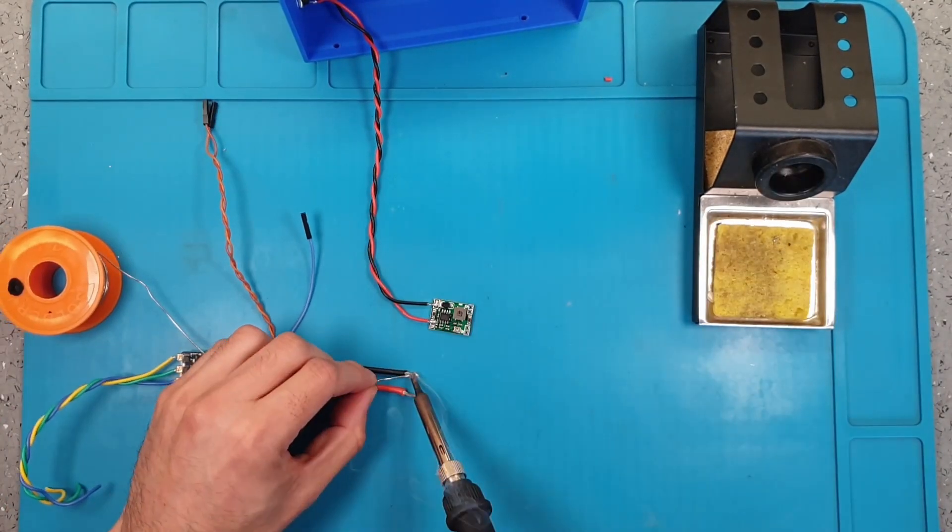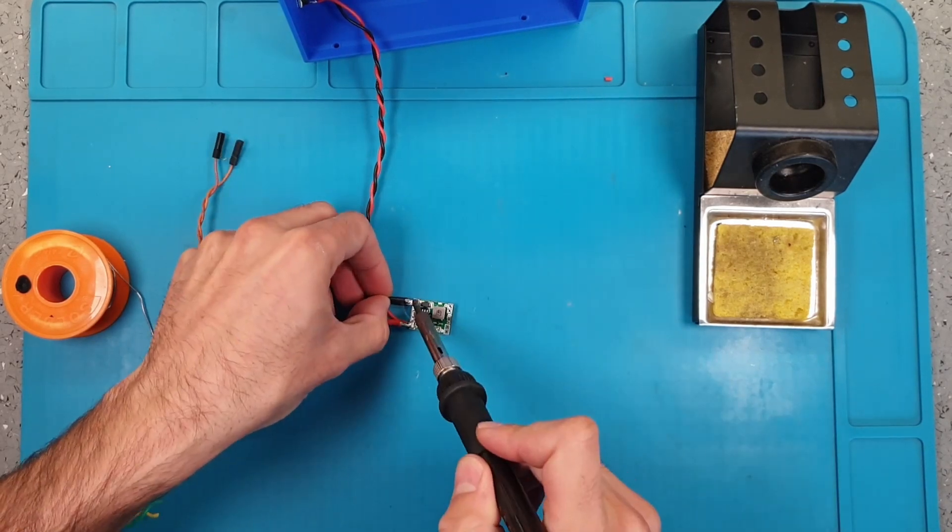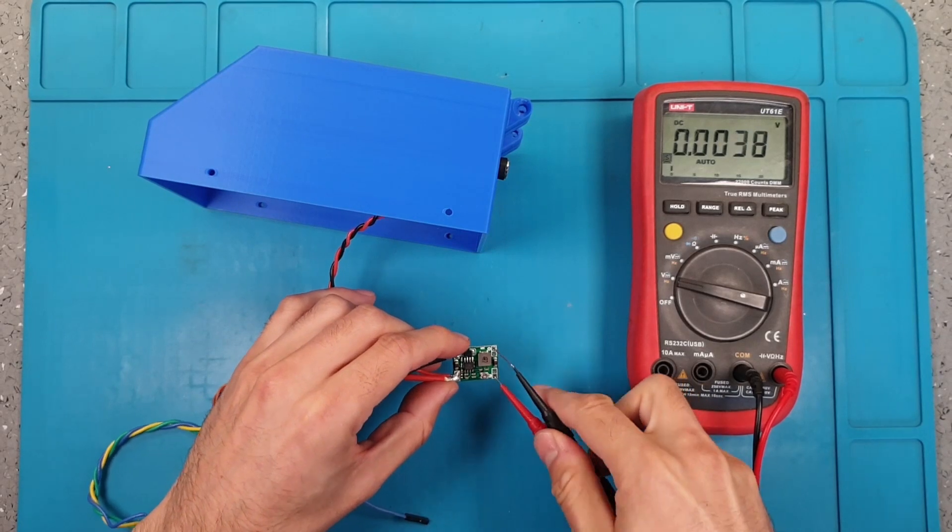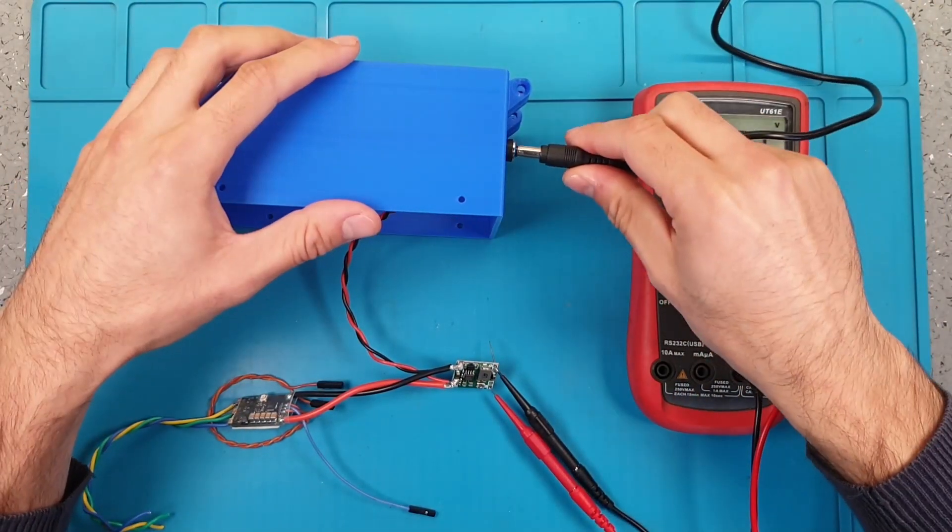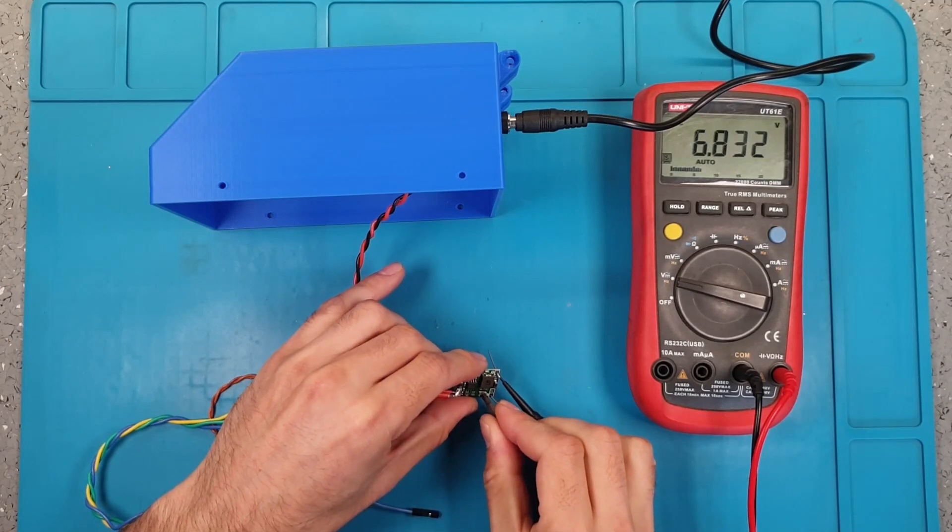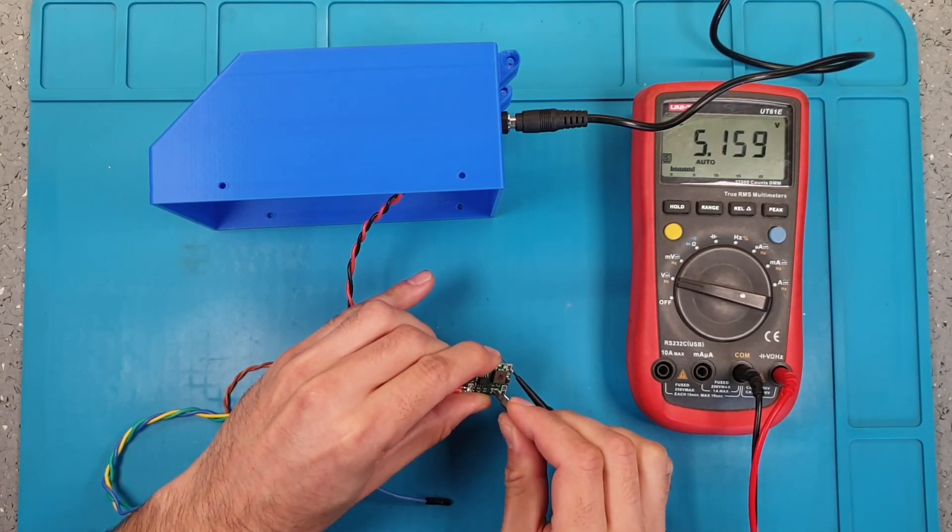And then the ESC power. In our case we have an adjustable DC-DC, so we use a multimeter to make sure the output of our DC-DC is 5V.